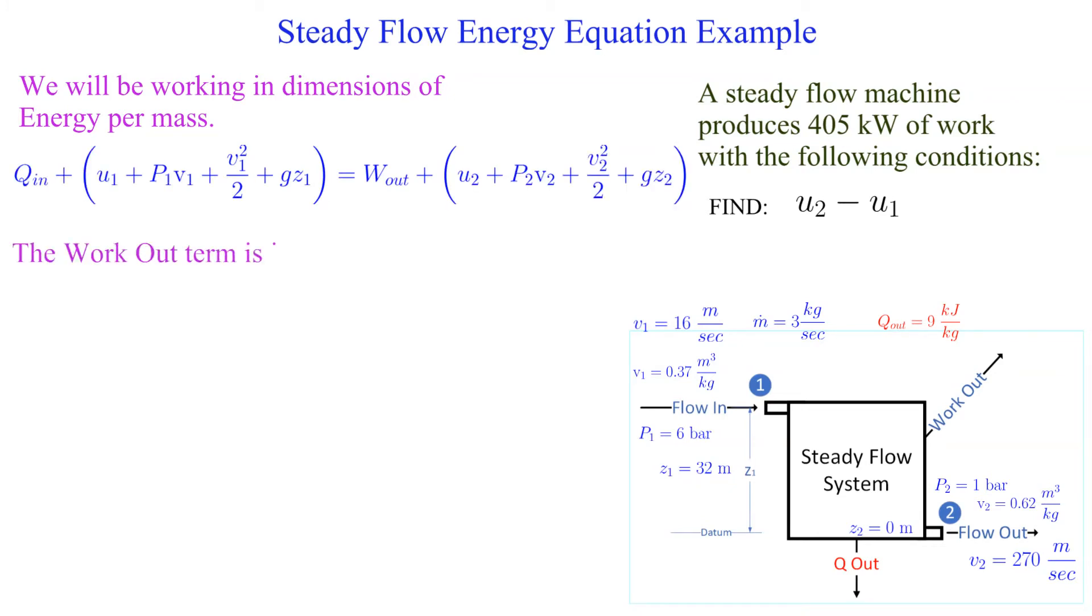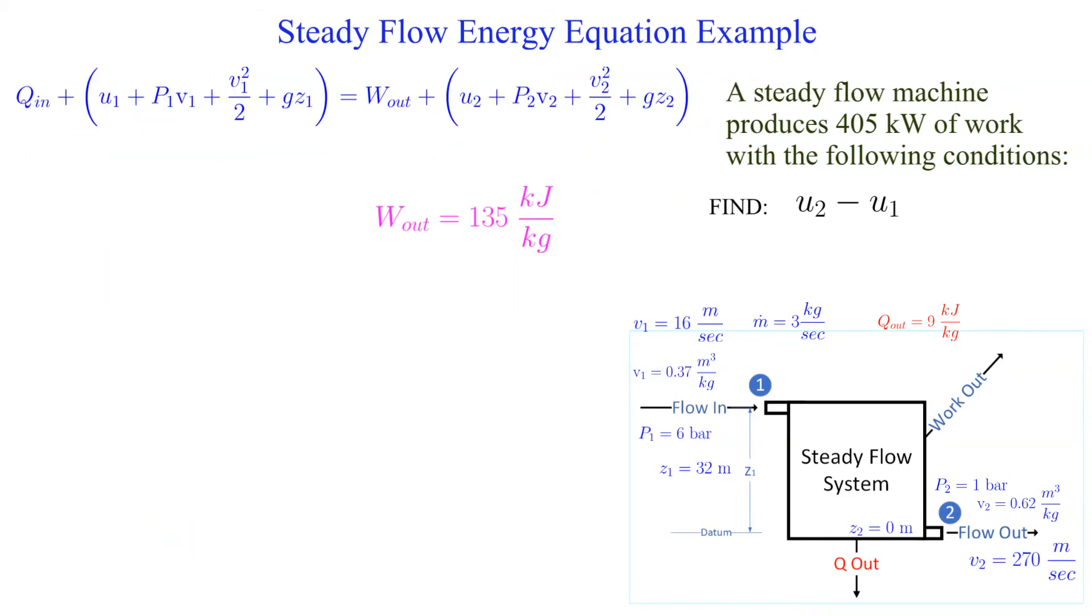The work is given in kilowatts. To obtain energy per mass we divide through by the mass flow rate as shown. By definition, heat transfer into the system is a positive value. In this example we are losing energy due to heat transfer. The heat term is minus nine kilojoules per kilogram.